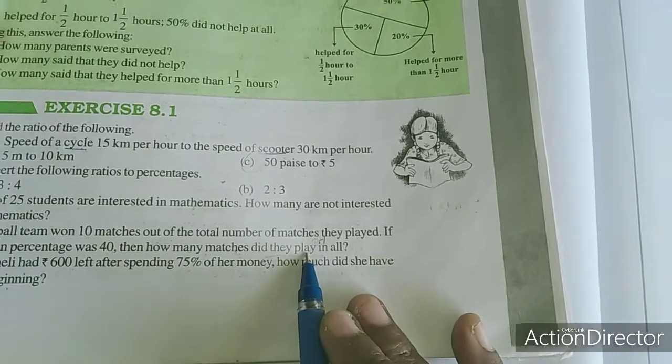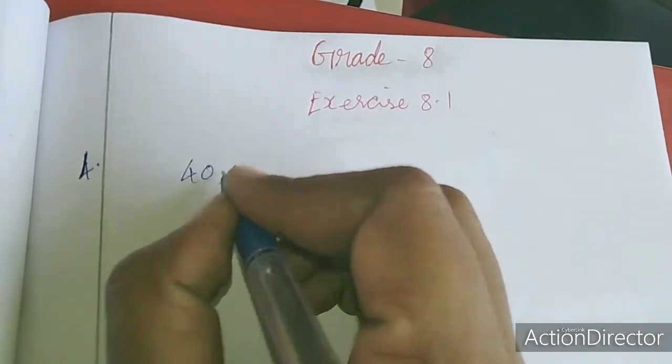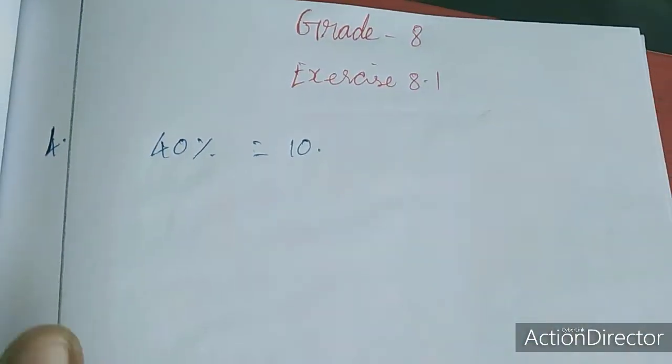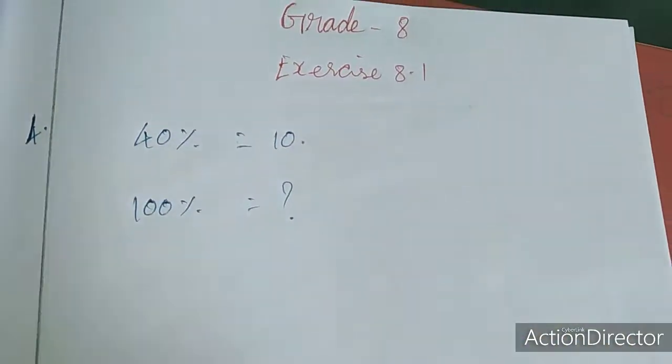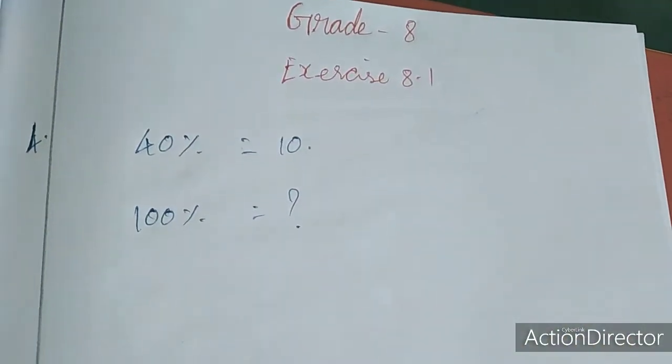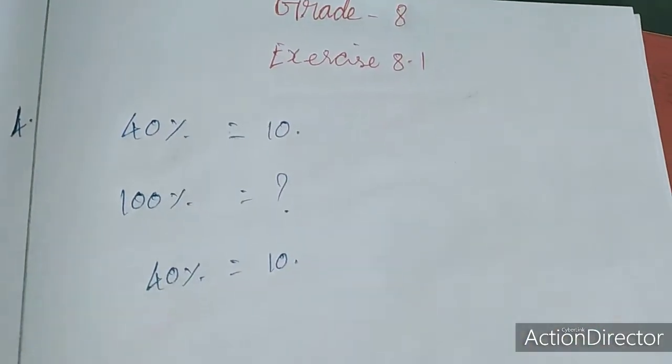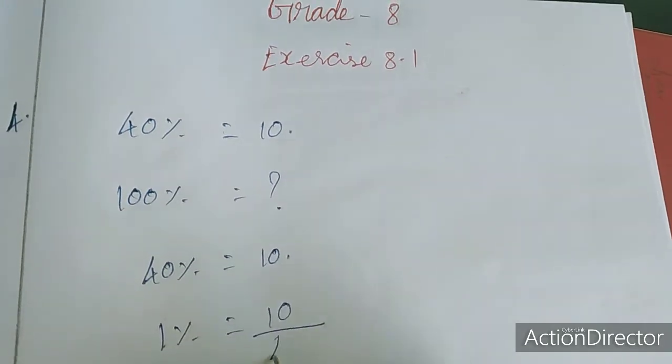Now we have to work out: 40% equals how much. We need 100% equals how much. Now 40% and 100% are given, so 40% equals 10, so that 1% equals 10 by 40.